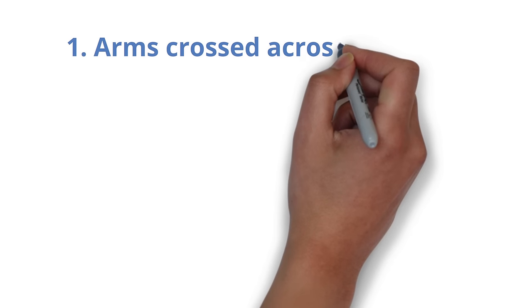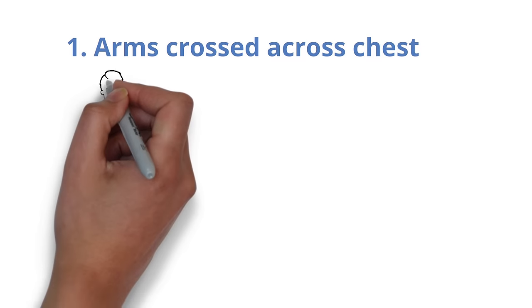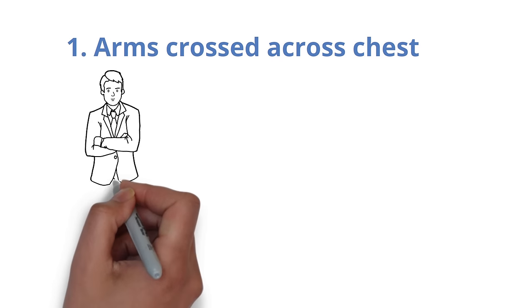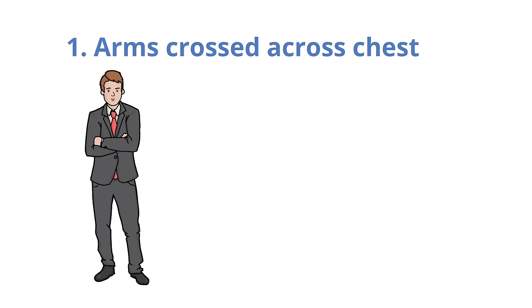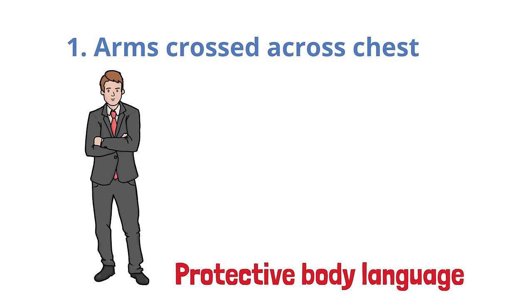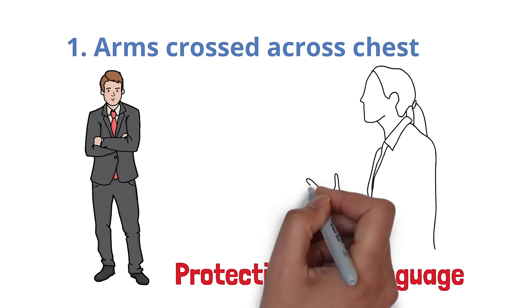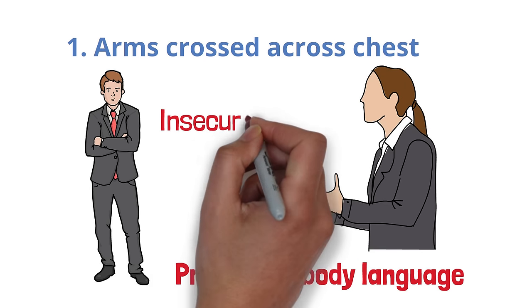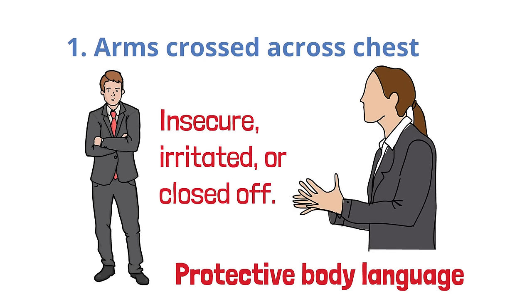Number 1. Arms crossed across chest. Crossing your arms over your chest when sitting or standing is almost always interpreted as protective body language. People generally see someone with crossed arms as insecure, irritated, or closed off.